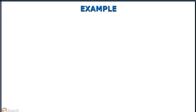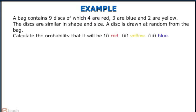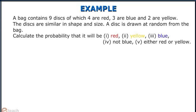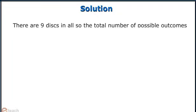Example: A bag contains 9 discs of which 4 are red, 3 are blue, and 2 are yellow. The discs are similar in shape and size. A disc is drawn at random from the bag. Calculate the probability that it will be: red, yellow, blue, not blue, and either red or yellow. There are 9 discs in all, so the total number of possible outcomes is 9.